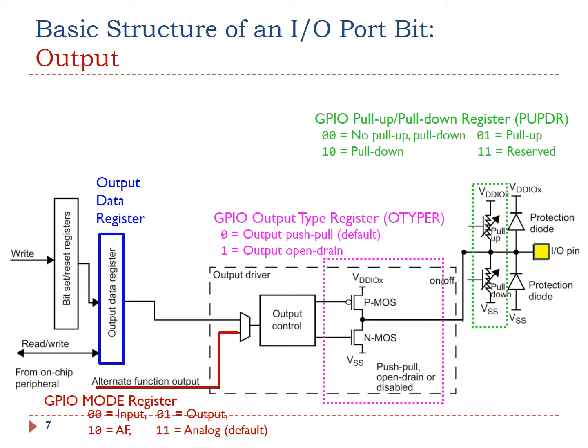When the pin is configured as output, the value written to the output data register is output on the GPIO pin. However, whether the pin has a high voltage output, a low voltage output, or a high impedance output depends on the configuration of the output type register and the pull-up pull-down register.